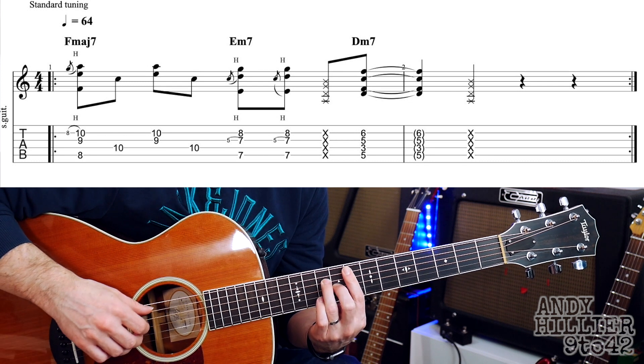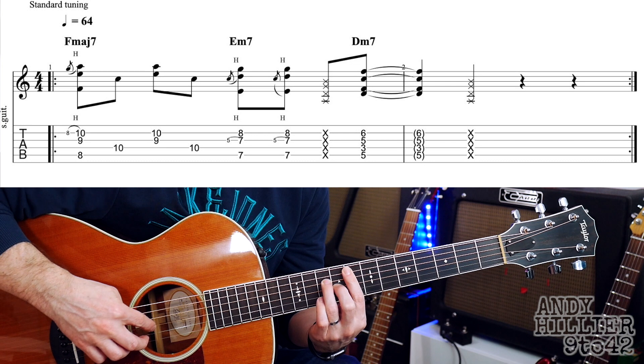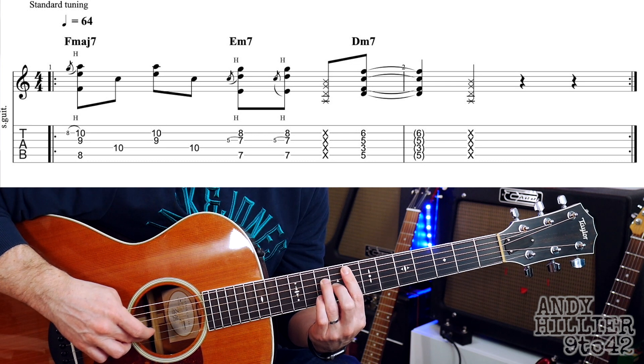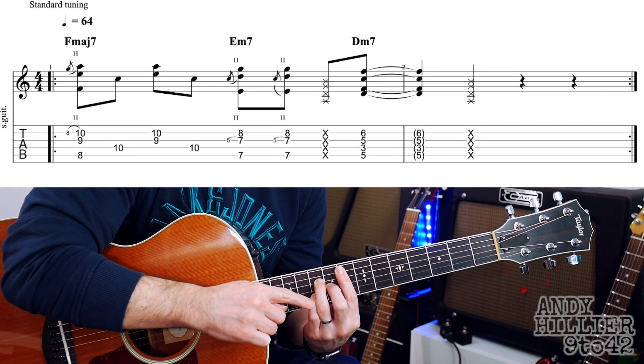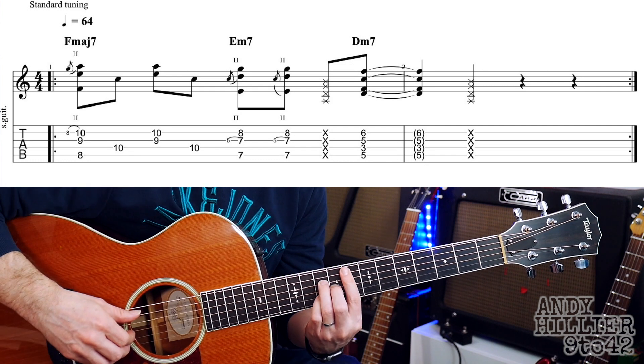But we're actually going to hammer it on. So we play the A string, the G string and the B string and we play them and slap the little finger down and that does a little hammer-on onto the 10th fret.